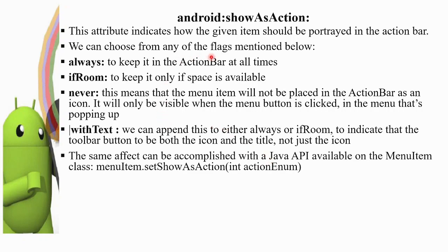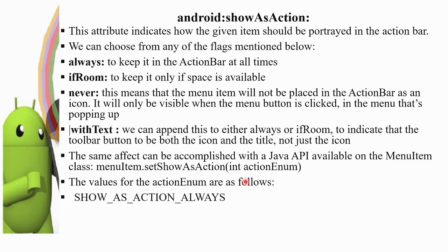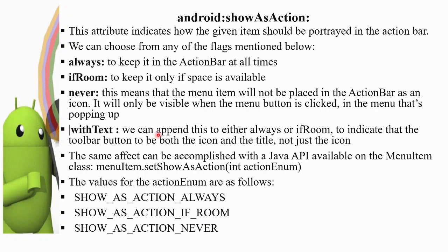The same effect can be accomplished with a Java API available on the MenuItem class. You can use the method MenuItem.setShowAsAction() with an action enum constant. The function is setShowAsAction and the action enum values are: showAsAction ALWAYS, showAsAction IF_ROOM, showAsAction NEVER, and showAsAction WITH_TEXT. These values are the same as the XML attribute values. MenuItem.setShowAsAction() lets you set the Java API programmatically.